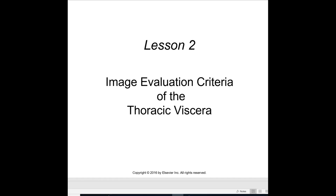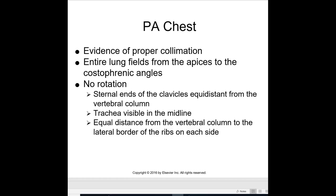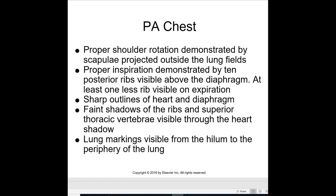Evaluation criteria for the chest: evidence of proper collimation should show the entire lung fields from the apices to the costophrenic angles. No rotation — sternal ends of the clavicles at equal distance from the vertebral column. Trachea visible in the midline, with equal distance from the vertebral column to the lateral border of the ribs on each side. Proper shoulder rotation is demonstrated by the scapulae projected outside the lung fields. Proper inspiration is demonstrated by 10 posterior ribs visible above the diaphragm; at least one fewer rib is visible on expiration. Sharp outlines of the heart and diaphragm, faint shadows of the ribs and superior thoracic vertebrae visible through the heart shadow, and lung markings visible from the hilum to the periphery of the lungs.